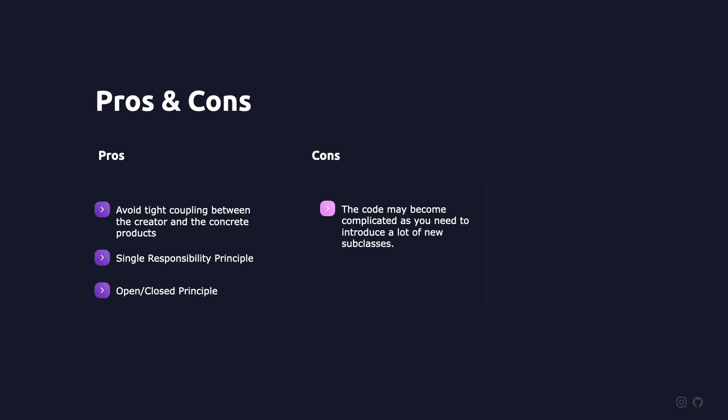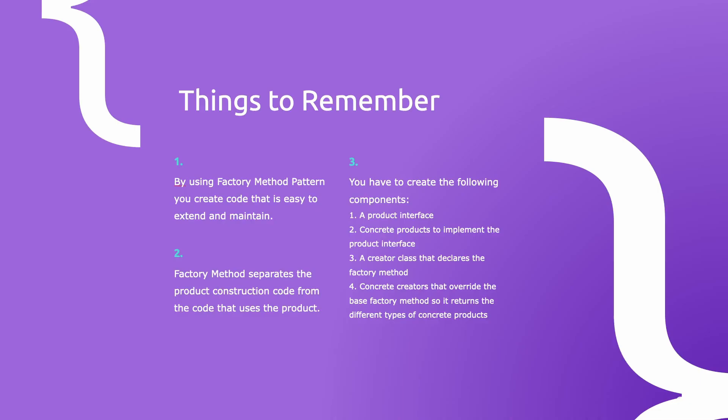Use factory method when the current implementation cannot comfortably accommodate new change, and when the implementation of an interface or abstract class is expected to change frequently. The pros are: first, avoid tight coupling between the creator and the concrete products; second, single responsibility principle by moving the product creation into one place; third, open-closed principle — you can introduce new types of products without breaking existing code. The one con is that the code may become complicated as you need to introduce a lot of new subclasses.